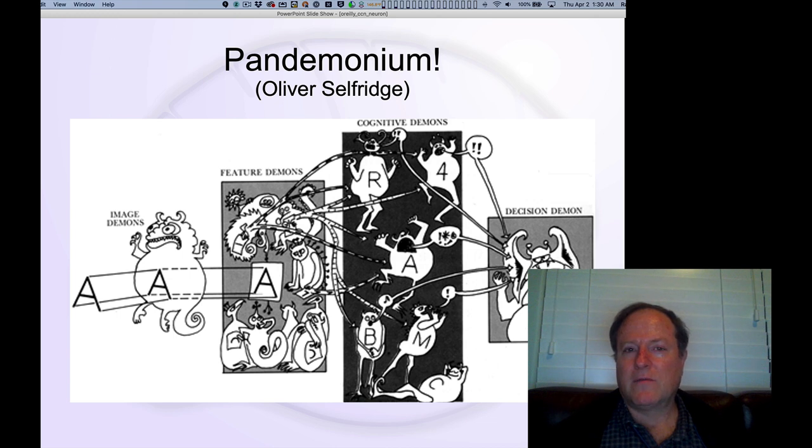Here it's actually useful to start with a very intuitive paradigm developed by Oliver Selfridge in the 50s that is based on this idea of demons, anthropomorphic representation of neurons, where they're basically detecting these patterns coming in. You have image demons that are receiving the external stimuli from the outside world, and then feature demons, as you can see with these little pieces of paper, are detecting certain individual feature elements from those visual inputs. And then cognitive demons are putting together combinations of those individual feature elements to try to recognize complete letters in this case, or numbers.